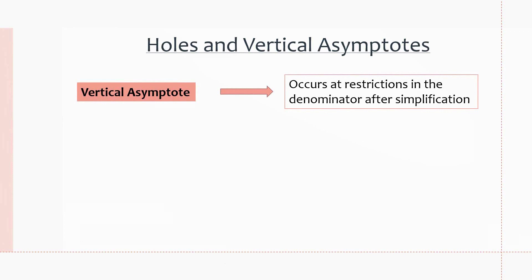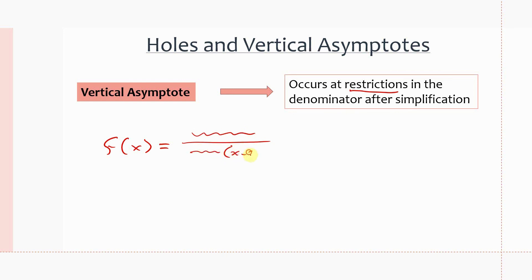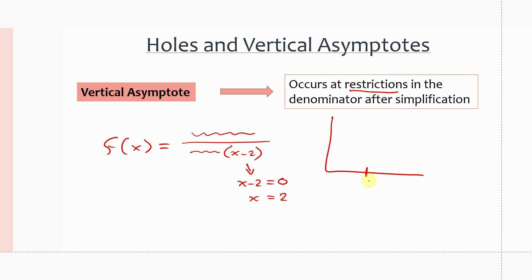We can also find where vertical asymptotes occur for a function. Vertical asymptotes occur at the restricted values in the denominator — for values of the variable that make the denominator equal to zero, there will be a vertical asymptote at that x value on the graph, represented as a dashed vertical line. For example, if the denominator has a factor (x − 2), then x = 2 makes this denominator zero and the function undefined.